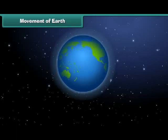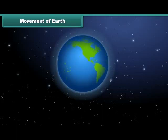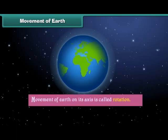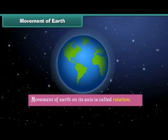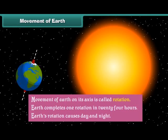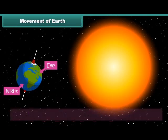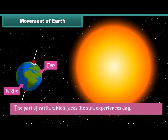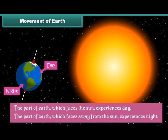Movement of Earth — Rotation: Earth shows two types of movement. Movement of Earth on its axis is called rotation. Earth completes one rotation in 24 hours. Earth's rotation causes day and night. The part of Earth which faces the sun experiences day, and the part which faces away from the sun experiences night.